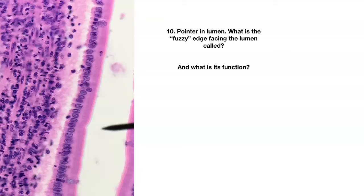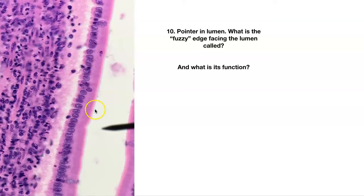Number ten — here's a close-up of our simple columnar cells. Here's the lumen. The apical modification is a fuzzy border — this is microvilli. Some places call it a brush border because it kind of looks like a brush. Unlike cilia, which you can really see, microvilli are just a blurry edge. What's its function? Microvilli increase the surface area of the cells for absorption.